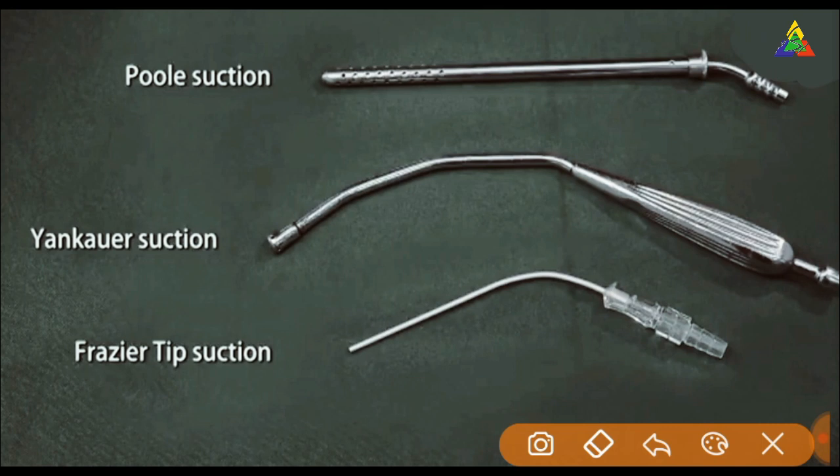The next image is a Poole suction catheter. This is a Yankauer suction. The third is a Frazier tip suction.